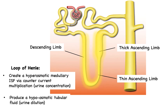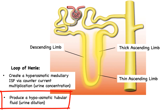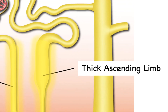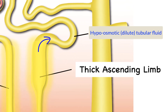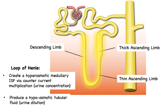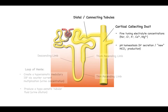The other main function of the loop of Henle is to produce a hypoosmotic tubular fluid. By the time the fluid leaves the thick ascending limb and makes its way to the distal portions of the nephron, that fluid is very hypoosmotic. This is important for times when urine dilution needs to occur — when solute conservation matters because there is too much water and not enough solute. By the time the fluid leaves the loop of Henle, only a small fraction of the initially filtered amount remains.